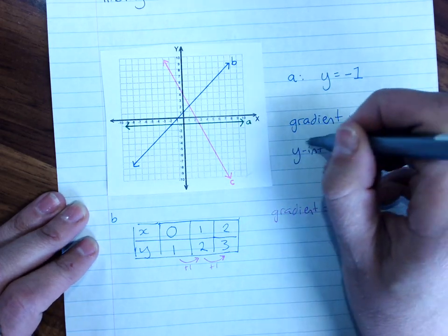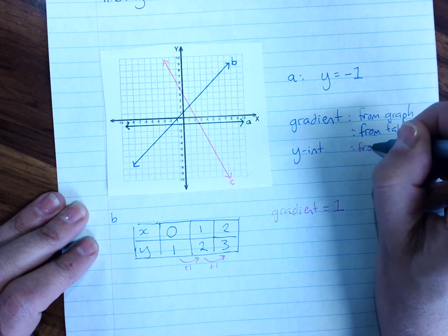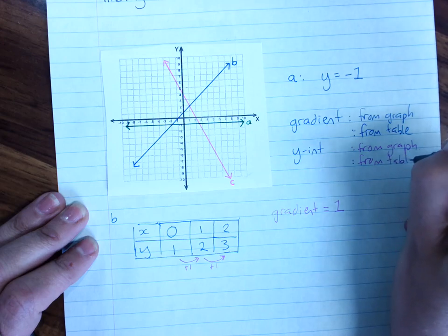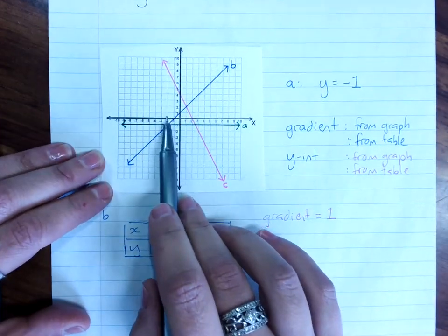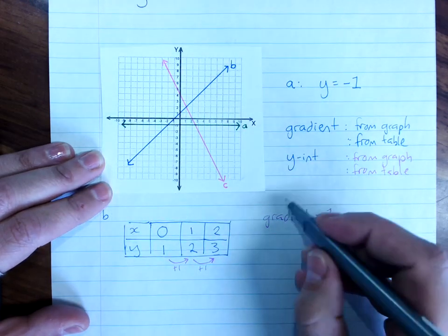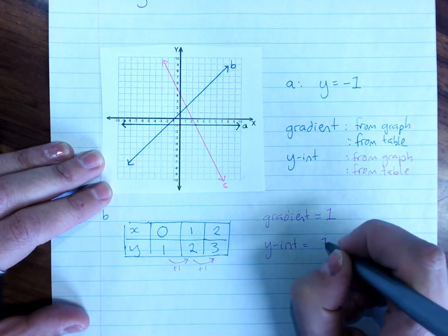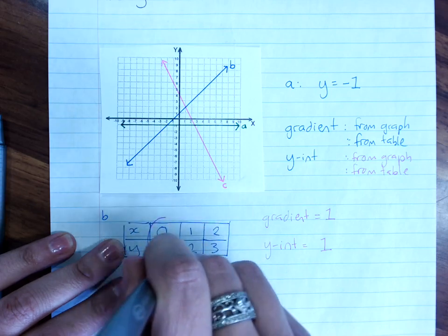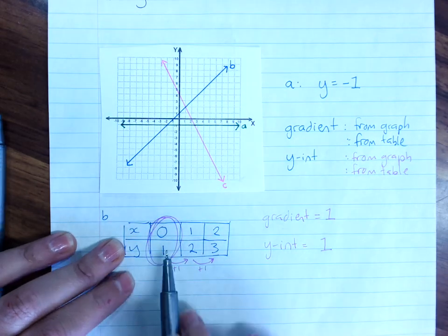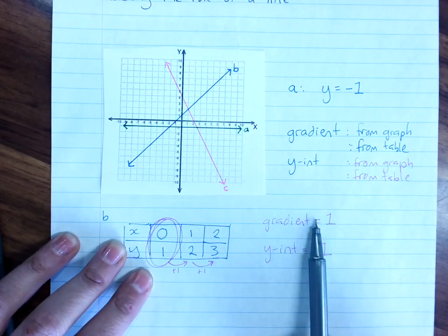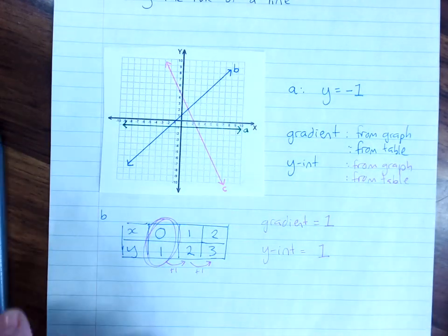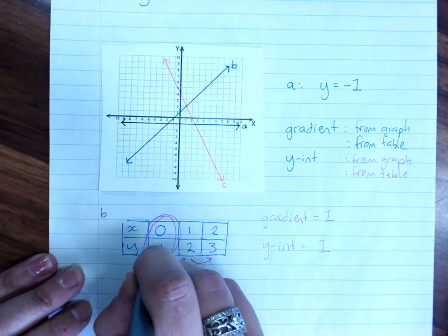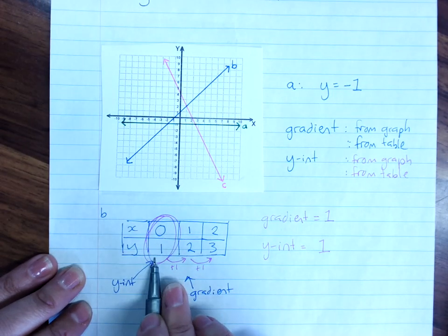And you also need the y-intercept. Again, you can get it from the graph, or you can get it from the table. From the graph, you can see that the y-intercept of line B is 1. From the table of values, you get the y-intercept when x is 0. So this line here has a gradient of 1 and a y-intercept of 1. You get the gradient from the pattern, and you get the y-intercept where x is 0.